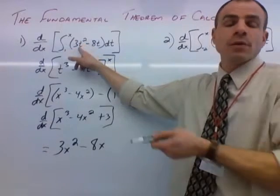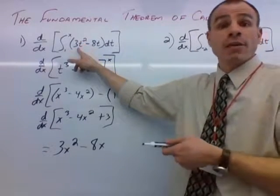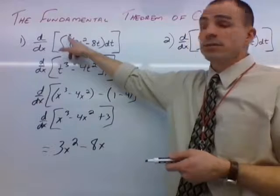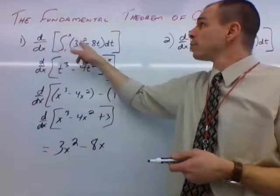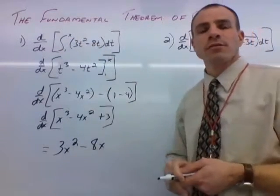Whatever the t variable in this case, it doesn't always have to be t, but whatever that variable is, it gets replaced with the variable in the upper bound. Put an x here, and here, and we have our solution.